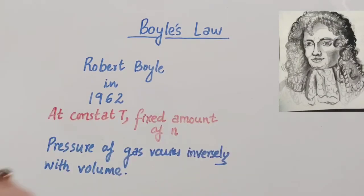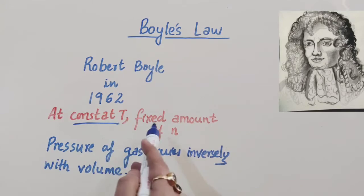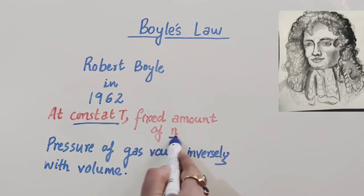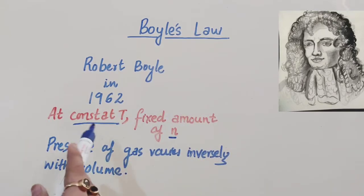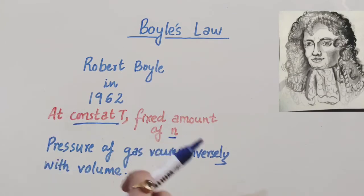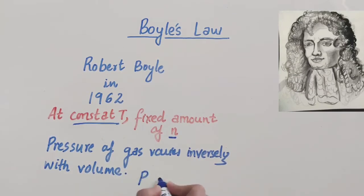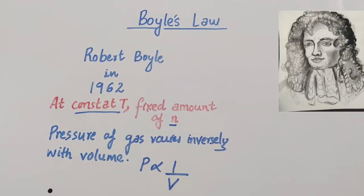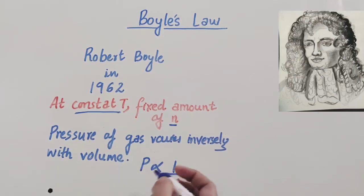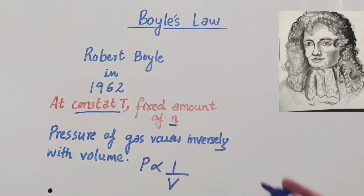Boyle's Law states that at constant temperature and fixed amount of mass (that is, n number of moles), the pressure of a gas varies inversely with volume — that is, pressure is inversely proportional to volume. So if we increase the pressure, then volume decreases; or if we decrease the pressure, then volume increases.